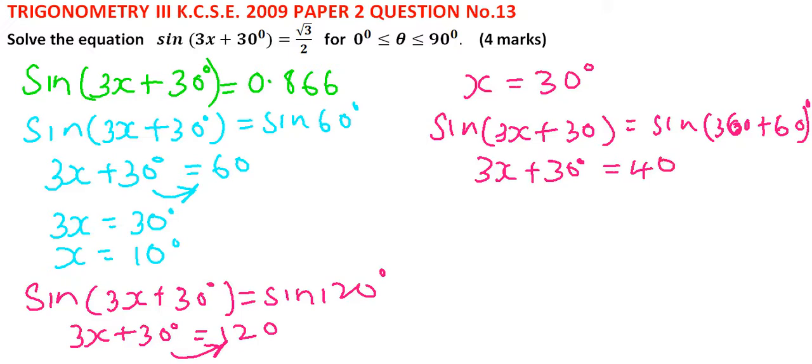We take 30 to the other side, that gives us 390. When you divide 390 by 3, you get x = 130°.